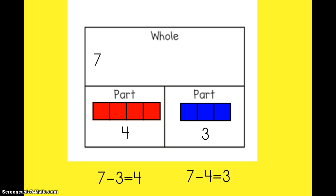If you said seven minus four equals three, then you are correct. These two facts at the bottom of your screen are related subtraction facts. Notice that both of these facts start with seven — I cannot change that number. The whole number always has to come first because that is the biggest number. I am just going to change the parts to make the related subtraction facts. So seven minus three equals four, and seven minus four equals three, are related subtraction facts. I made both of those facts using that same mat and starting with the same whole number.